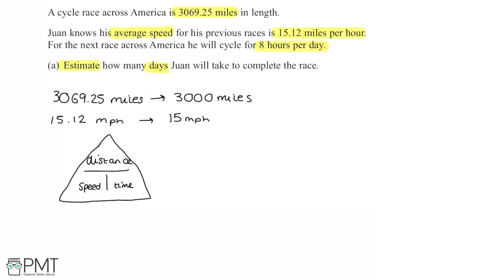If I want to calculate time in this instance, I simply do distance and then divide that by the average speed. So the distance, I've rounded to 3000 miles, and then I'm dividing that by the speed, the average speed which I've rounded to 15. These numbers are going to work really nicely together, so we know we've chosen good estimates.